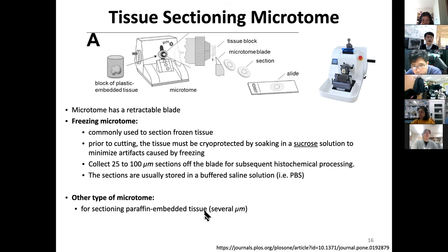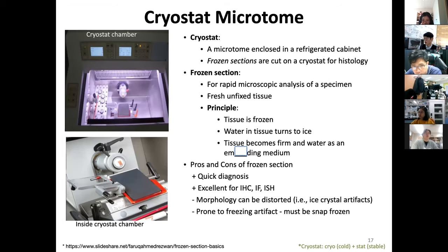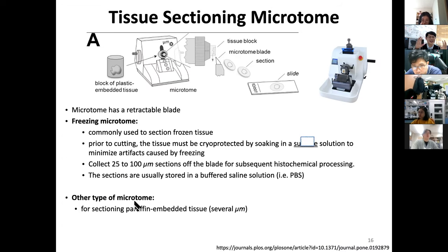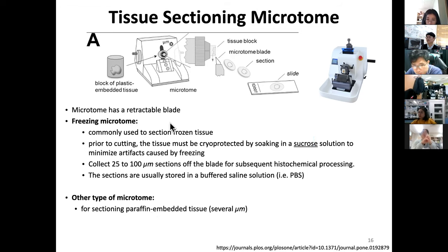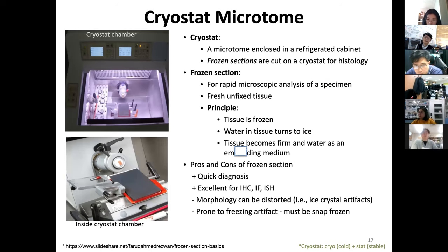With paraffin-embedded tissue, sections can go down to several micron levels, but one important consideration: if your tissue contains GFP protein you want to preserve, the frozen section approach preserves GFP, while paraffin embedding — which heats up and cross-links everything — may destroy those GFP protein molecules.